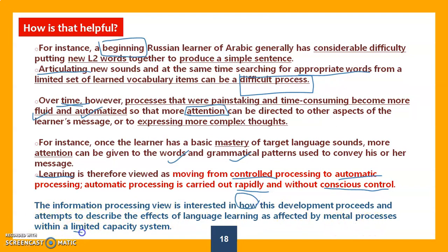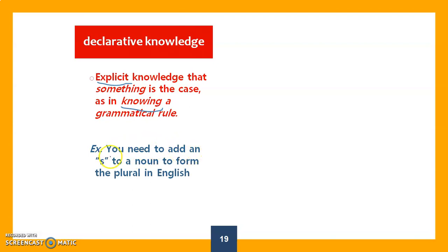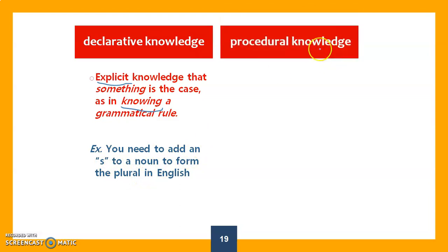This gets us to another concept developed by the cognitive approach — there are two concepts. The first is declarative knowledge, which is explicit, direct knowledge that a grammatical rule is the case. The learner just knows it because they learned it. For example: you need to add an 's' to a noun to form the plural in English. Then we have procedural knowledge, which is related to procedure.